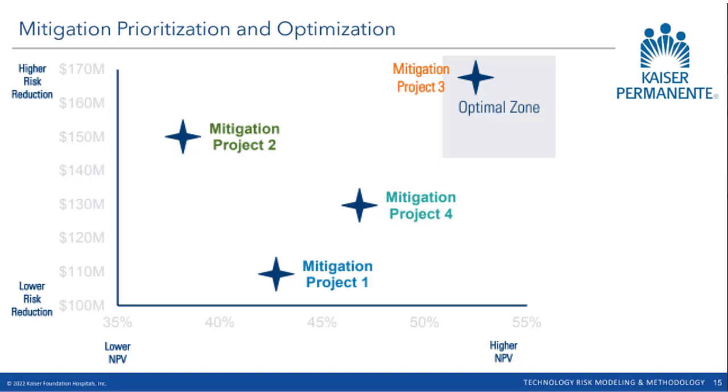Hello, I'm Eng-wee Ethan Yeo, Principal Architect for Technology Risk Management at Kaiser Permanente. My team develops quantitative risk models to help facilitate risk-benefit decisions in the organization. We use Analytica to model technology risk, understand our organization's risk exposure, right-size our cyber insurance coverage, and prioritize our budget for mitigation projects.